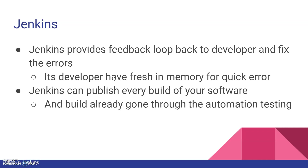The developer can fix that feedback quickly because the issue is fresh in memory. Jenkins can publish every build to your software — it's used for CD, so you can manage artifacts and publish every build to your customer or artifact management system, then deploy to a specific environment. It also helps integrate your automation testing: once a build is generated, automation testing is triggered and you get immediate feedback on your build.